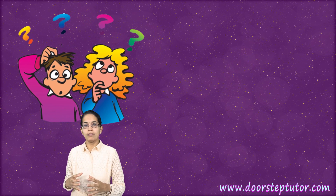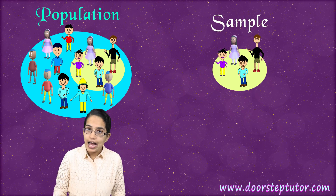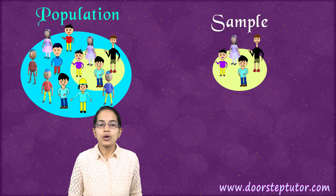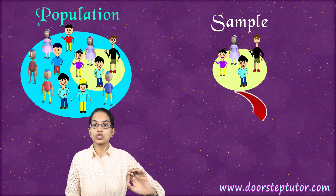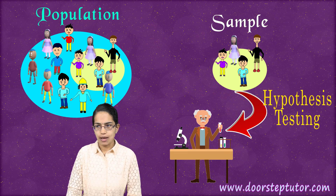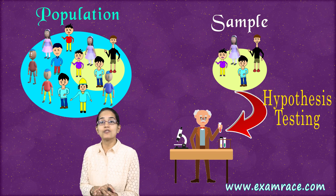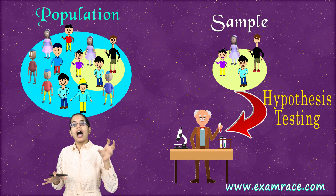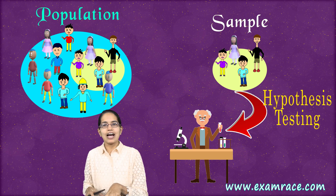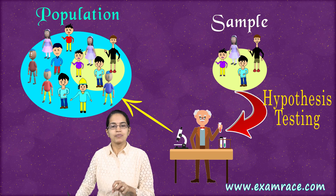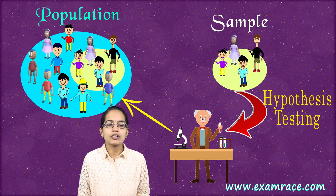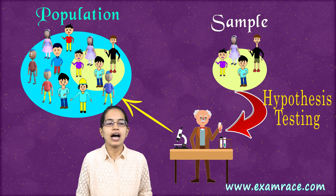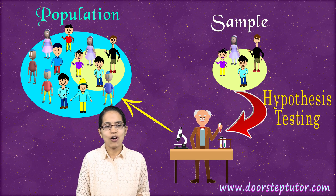Whenever you have a research problem, we begin with understanding the very fundamentals of whether to use a population or a sample. As we had discussed in our previous lectures on statistics, you have the whole group which is considered as the population. Of this population, we have a limited section on which we actually do the research, and that is what we call a sample. Whenever we are doing hypothesis testing, we study an outcome on a sample of the population and try to apply that outcome to the whole group.